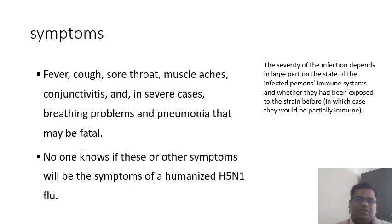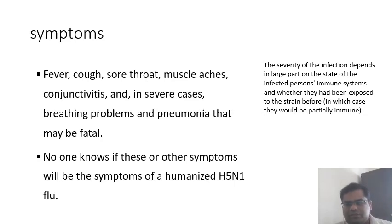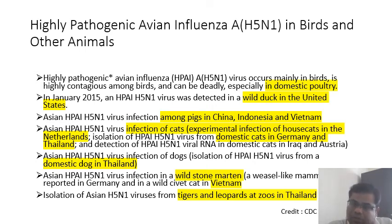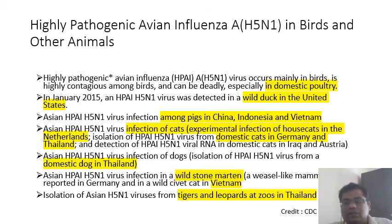Recorded symptoms of H5N1 infection in humans include fever, sore throat, muscle pain, conjunctivitis, breathing problems — which may be fatal. Whether these will be the symptoms of a humanized H5N1 remains unknown. Severity depends largely on the state of the infected person and whether they have been exposed to the strain before. The reservoirs of H5N1 include domestic poultry, wild ducks, pigs, infected cats, domestic dogs in Thailand, wild storks, and even tigers and leopards in Thailand.